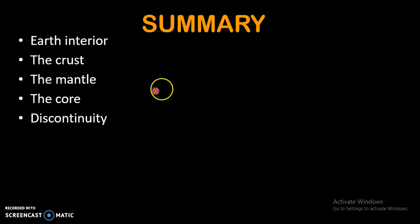Regarding the discontinuities, we have five: Conrad discontinuity, Mohorovičić discontinuity, Repetti discontinuity, Gutenberg discontinuity, and Lehmann discontinuity. Conrad discontinuity is the boundary between sial and sima. Mohorovičić discontinuity is the boundary between the crust and mantle. Repetti discontinuity is the boundary between the upper mantle and lower mantle. Gutenberg discontinuity is the boundary between the core and mantle. And Lehmann discontinuity is the boundary between the outer core and inner core.